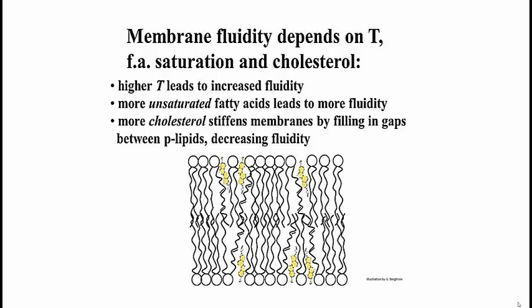So we have tropical fish, and we have fish that swim under the Arctic ice. Think about how the membranes of the cells of these fish might differ in order to guarantee that there will be the right amount of fluidity to allow proper membrane function.